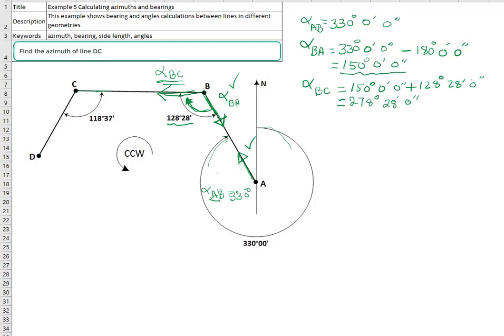Now we move on the same line but in the opposite direction. This is alpha CB, and alpha CB is the back azimuth of alpha BC. And since alpha BC here is more than 180, so alpha CB, the back azimuth equals to 278 degrees, 28 minutes, and 0 seconds minus 180, which is the straight angle, and this equals to 98 degrees, 28 minutes, and 0 seconds.